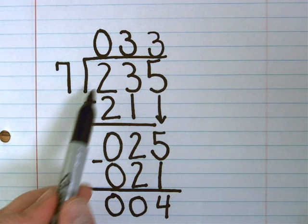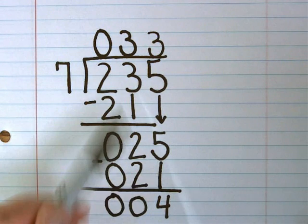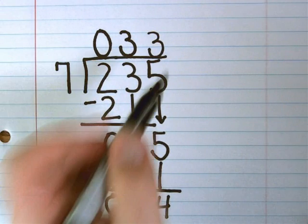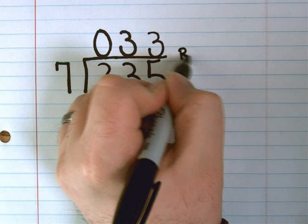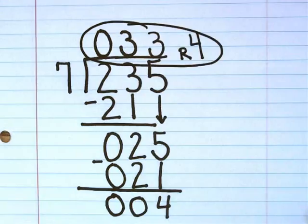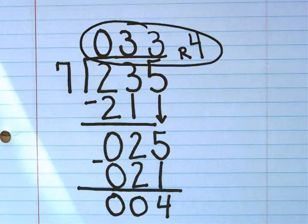Everybody downstairs has a partner upstairs, so I'm done. 4 happens to be the remainder. I'll write R4, circle it, and there you have just solved a one-digit divisor. Thank you.